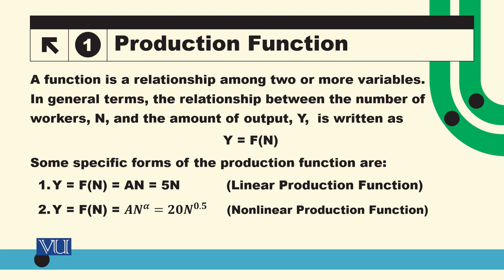So function, aap yeh bhae kae saktay hain, yeh ek tada ki dependence hai. So output depends on the units of worker. Yaani hum kitni output paida hoge, it depends how many units of worker are being utilized. So yeh toh general form thi. Specifically, we have different forms of production function.